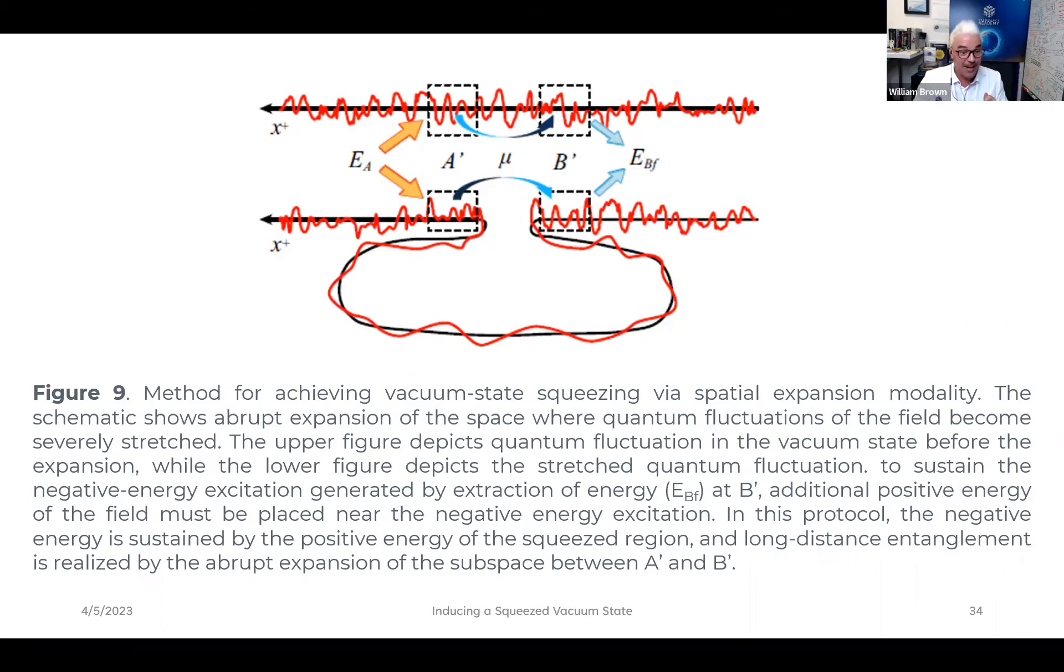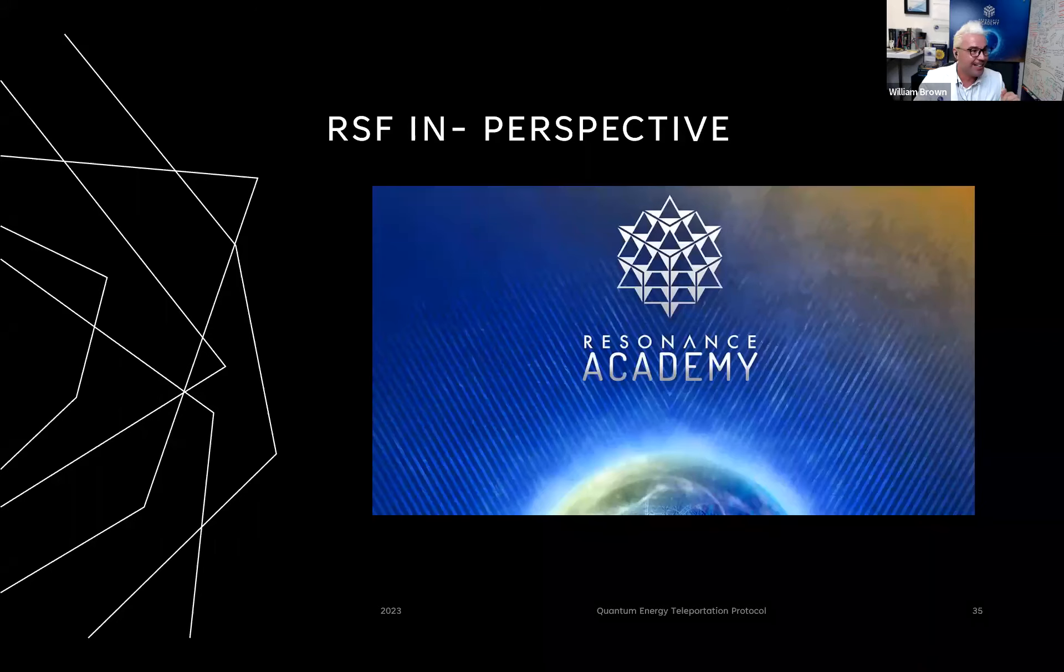Like instantaneous communication or signaling, those things become possible when you begin engineering the space-time metric. So communication via like a wormhole, maybe even travel via a wormhole. These get into very interesting and exciting potential applications.